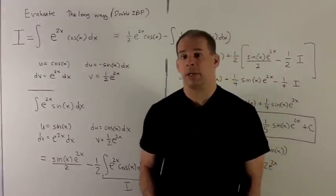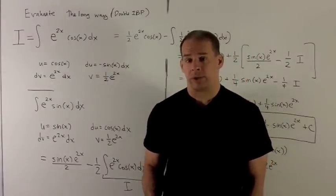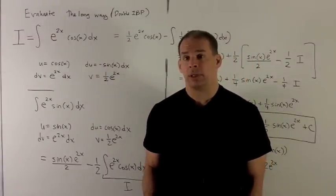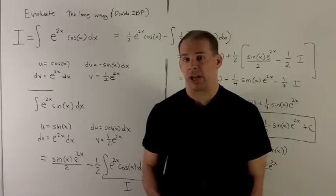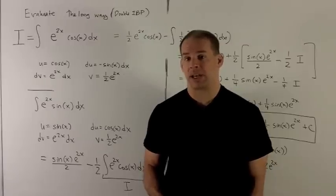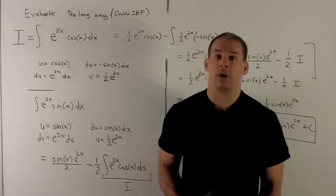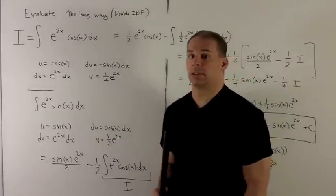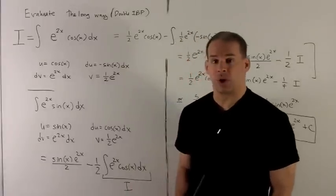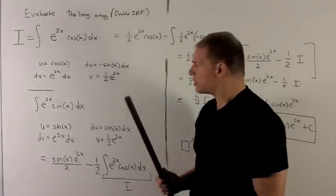In another problem, I show how to do this without using integration by parts at all, but you need to know that the final answer has e to the 2x cosine x and e to the 2x sine x in the final answer. Then it's just a matter of figuring out the coefficients. In this case, we're just going to grind it out. So let's take a look.